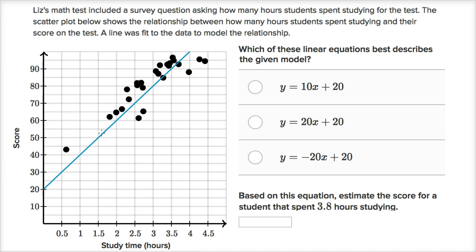and then they fit a line. When they say which of these linear equations best describes the given model, they're really saying which of these linear equations describes or is being plotted right over here by this line that's trying to fit to the data. So essentially, we just want to figure out what is the equation of this line?